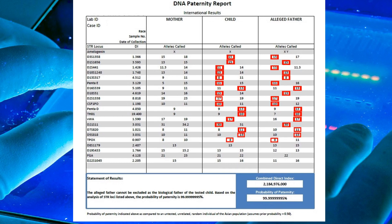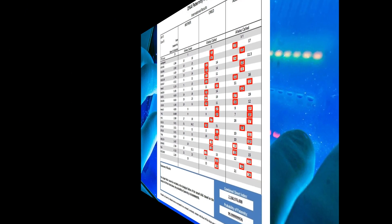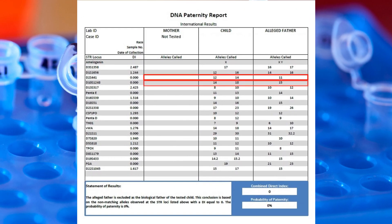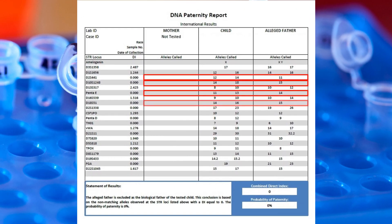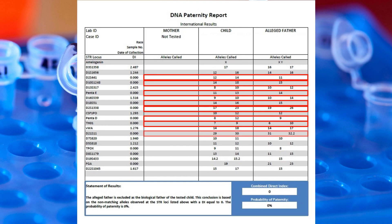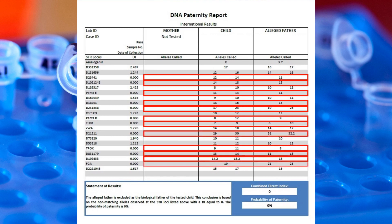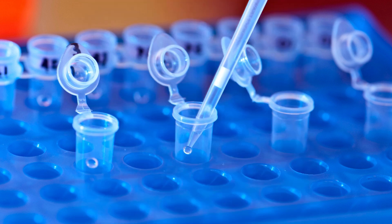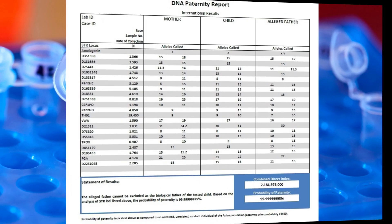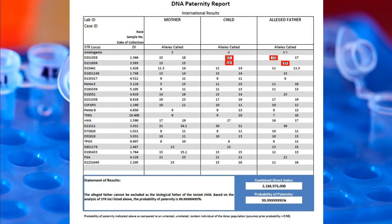The box in the chart on the laboratory report highlights the obligate paternal allele and the alleged father's matching allele, if any. If the alleged father does not have the matching allele, then he usually cannot be the biological parent. If he does have it, then he could be the father.